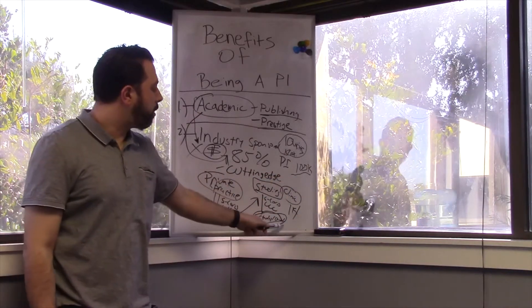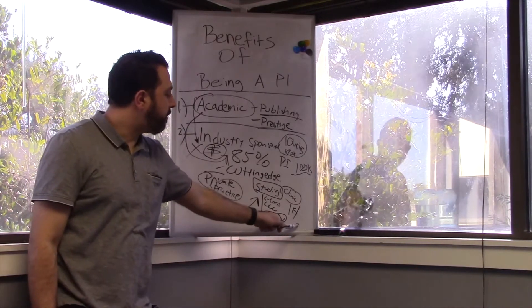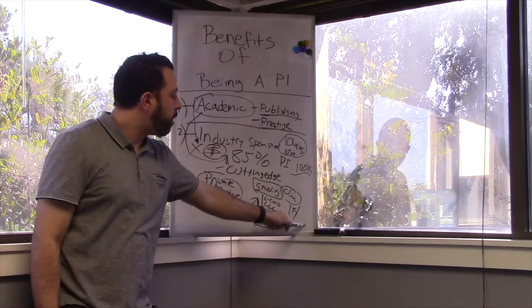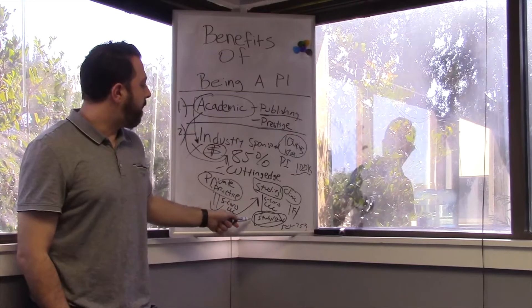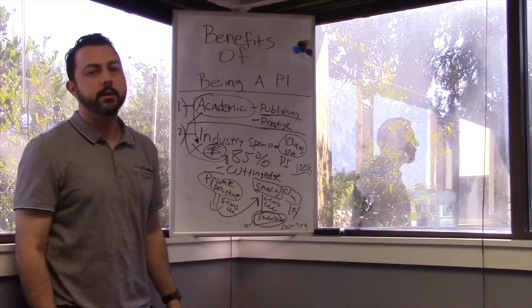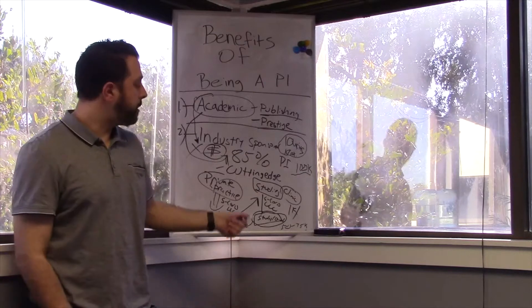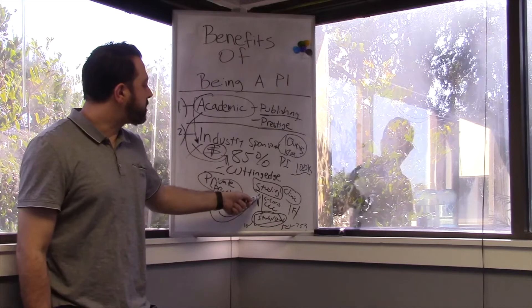You're paying a coordinator maybe anywhere from $50,000 to $75,000 a year salary. They're doing most of the work. They might have assistants that you're paying, like $15 an hour, like medical assistants to draw blood, or they may not. Maybe the study coordinator does it all.